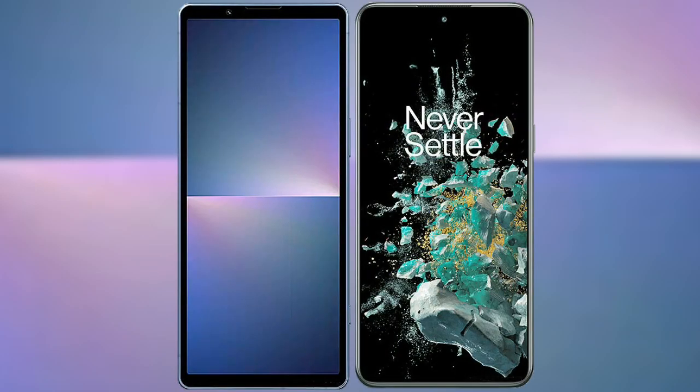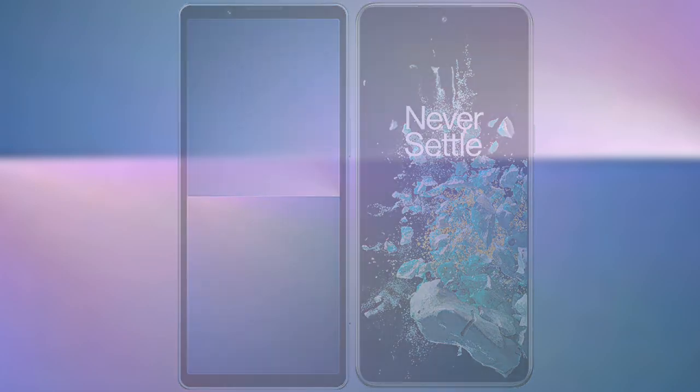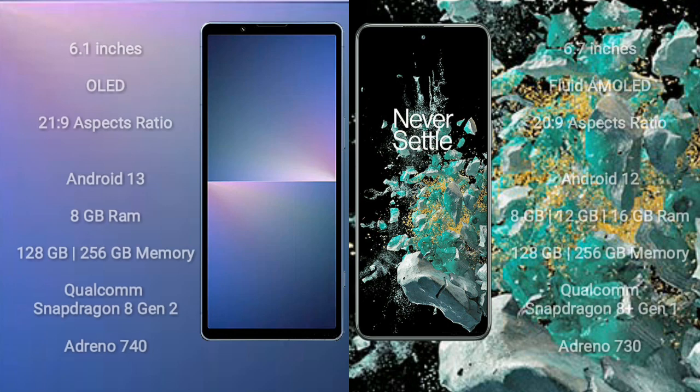I will compare the new Sony Xperia 5 Mark 5 with OnePlus 10T. Sony Xperia 5 Mark 5 comes with a 6.1-inch OLED display and aspect ratio 21:9. OnePlus 10T comes with a 6.7-inch OLED AMOLED display and aspect ratio 20:9.